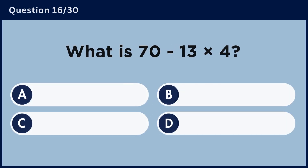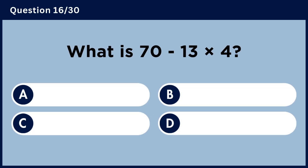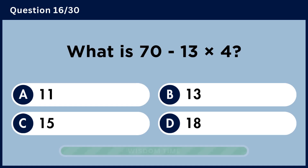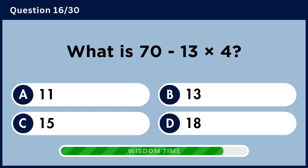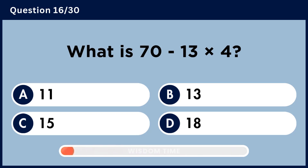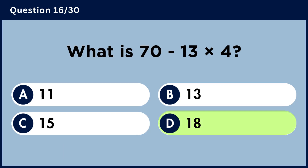What is 70 minus 13 multiplied by 4? Answer D, 18.